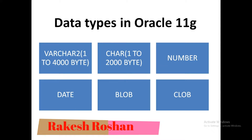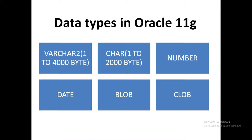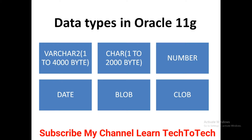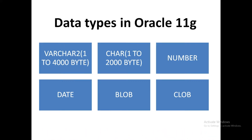The first important data type is VARCHAR2. VARCHAR2 is the data type used for variable length strings. The length of your string will be starting from 1 to 4000 bytes.